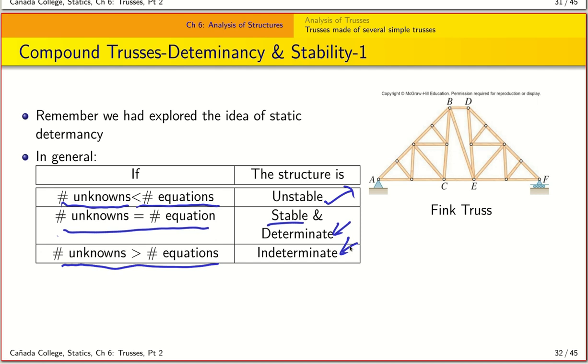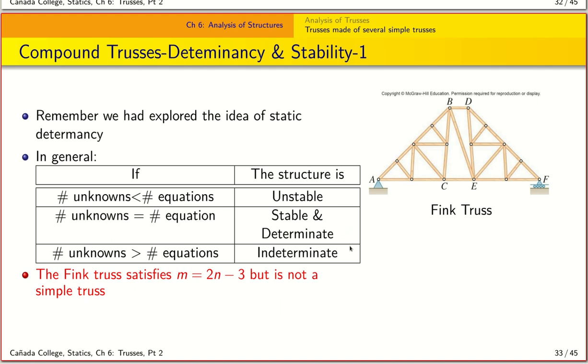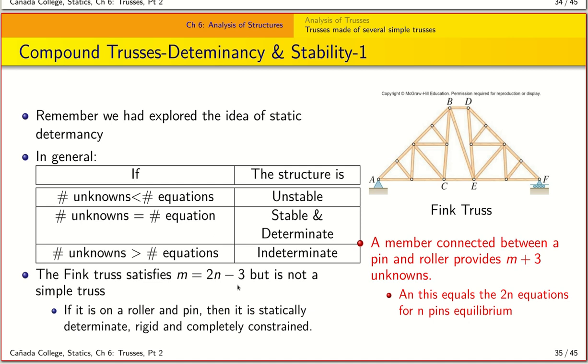So with that, let's look at the example of the Fink truss. We know that it already satisfies M equals 2N minus 3 in spite of the fact that it is not a simple truss. Now, if it is on a roller and a pin, then it turns out that this is a statically determinate system because we have something that continues to agree with this situation here that M equals 2N minus 3. And so that means the Fink truss is actually a stable and completely constrained system. That means it won't move.